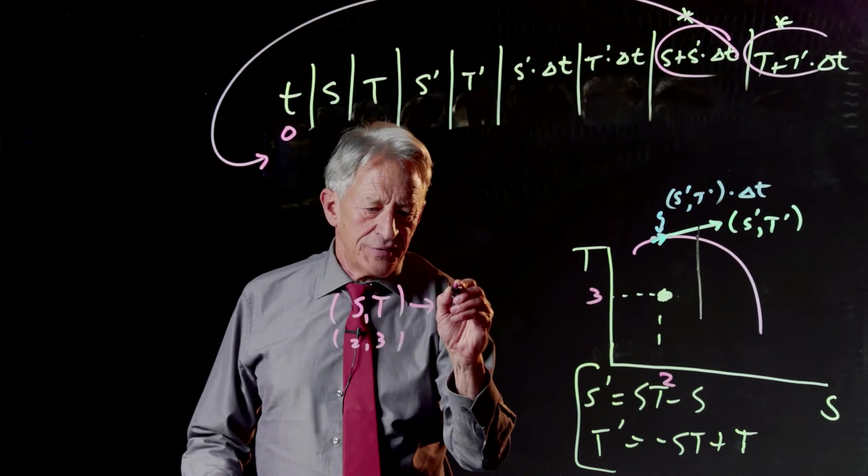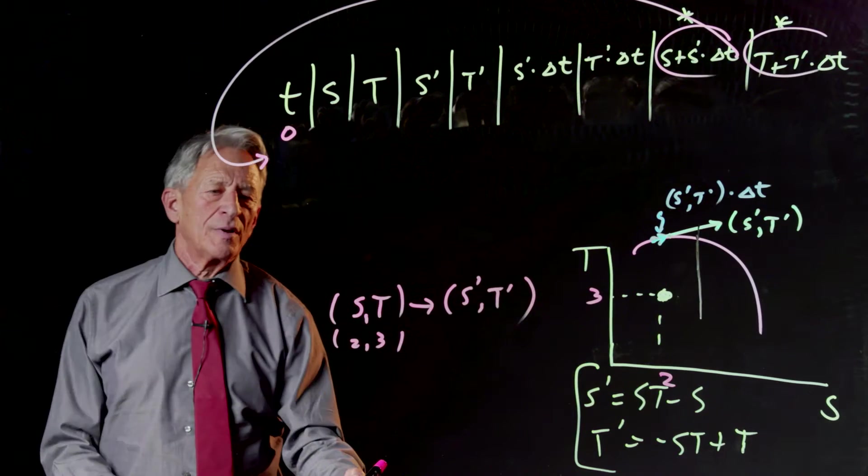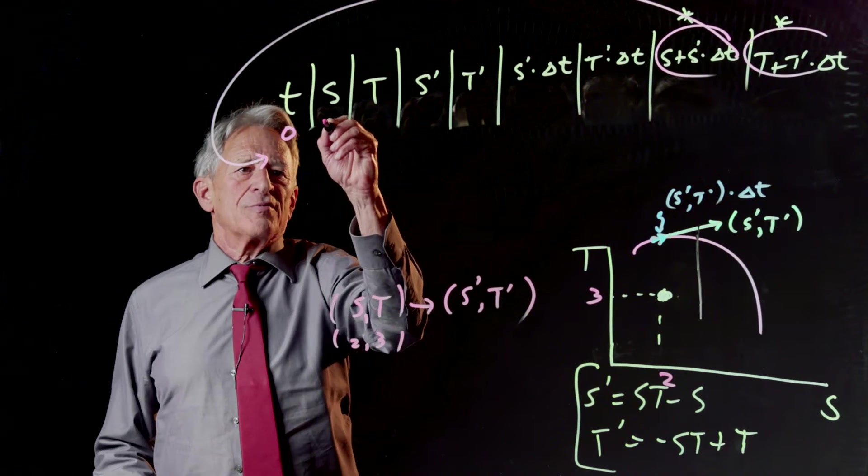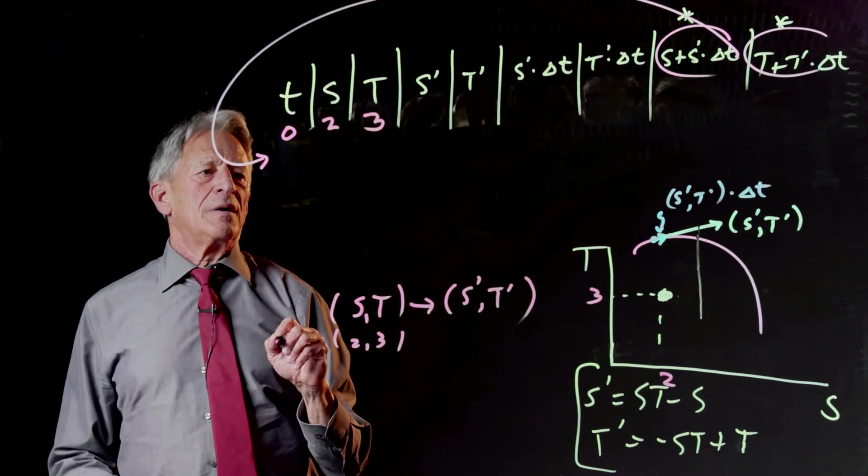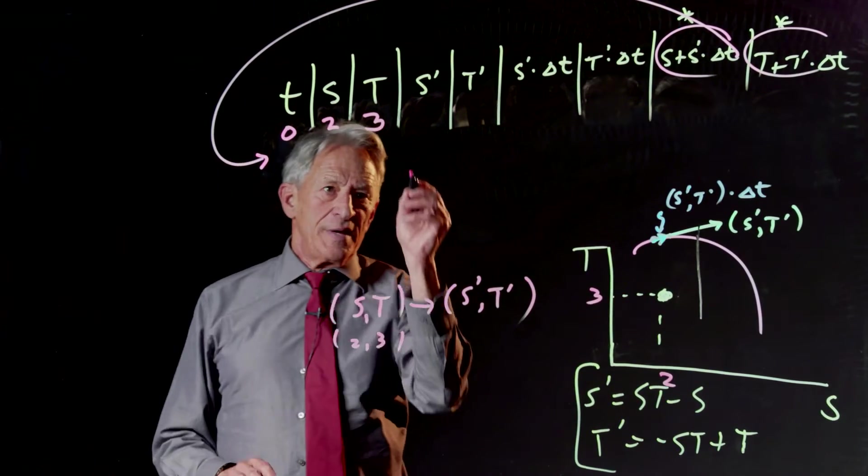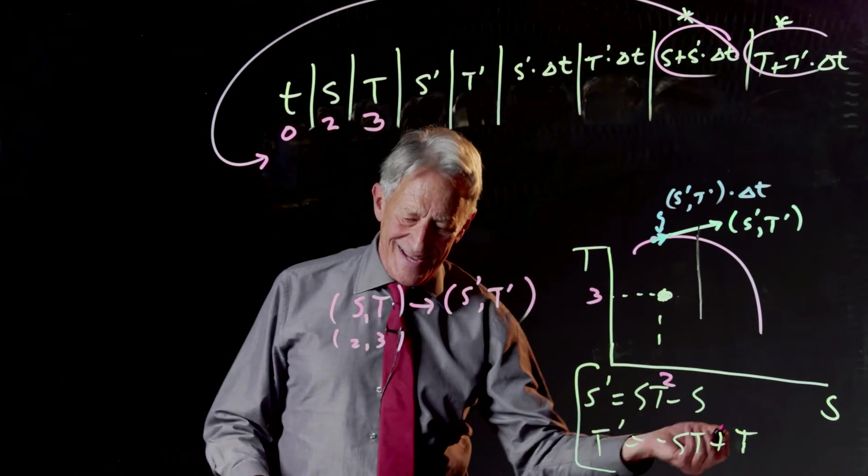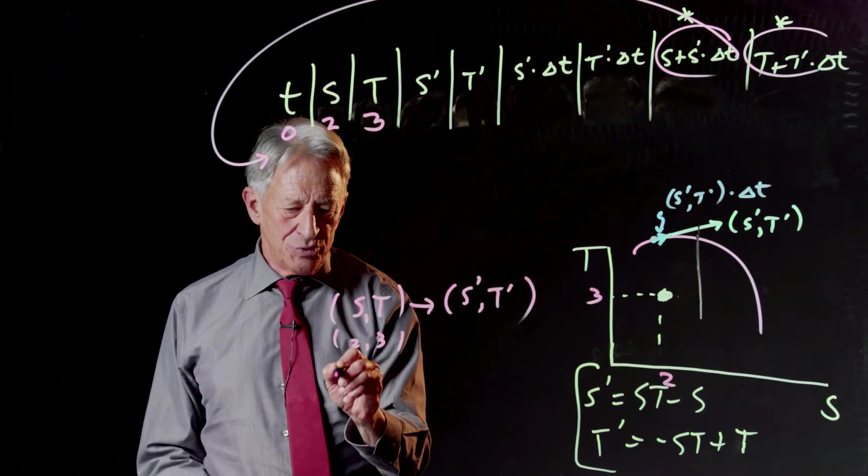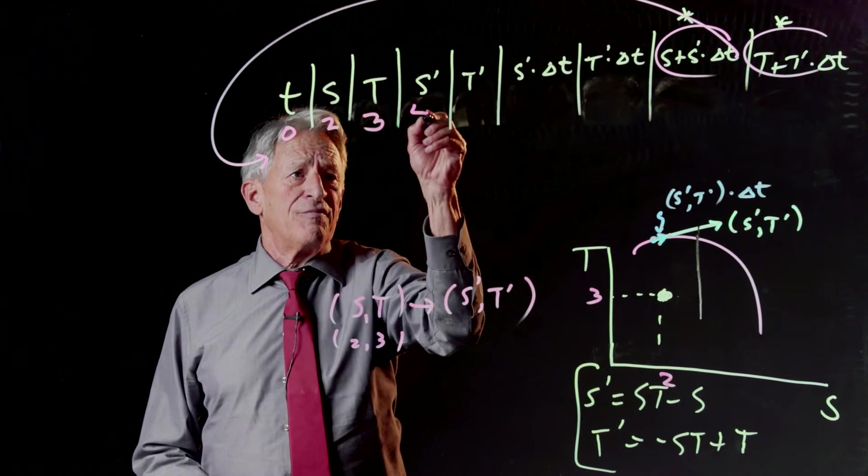And now the vector field is going to give us s prime t prime. So s 0 is 2, t 0 is 3. What is s prime? s prime is s t minus s, that's 2 times 3 minus 2, that's 4.